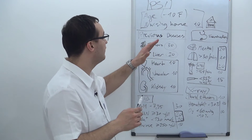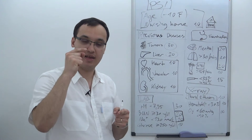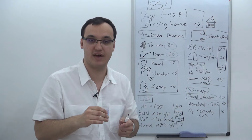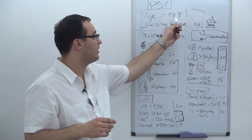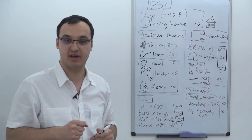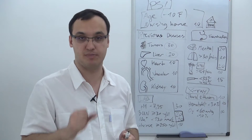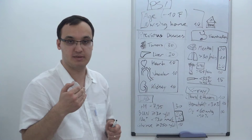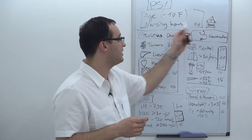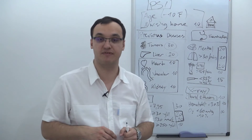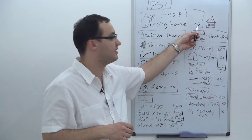To calculate the score, first we ask the age — you get one point for each year. So if you have a 40-year-old patient, he gets 40 points. Females get minus 10 points, meaning a 40-year-old female only gets 30 points. We also ask whether the patient lives in a nursing home — if at home, no points; if in a nursing home, 10 points.